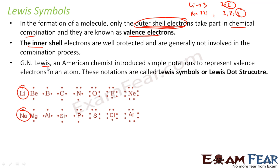Lewis was an American chemist. He introduced a simple notation to represent the valence electrons in an atom, and these notations are called Lewis symbols or Lewis dot structure. The way it works is you just write the name of the atom—for example, carbon. Carbon's atomic number is 6, so the electronic configuration is 2, 4. The outermost shell has 4 electrons, so you just put 4 electrons here like this.